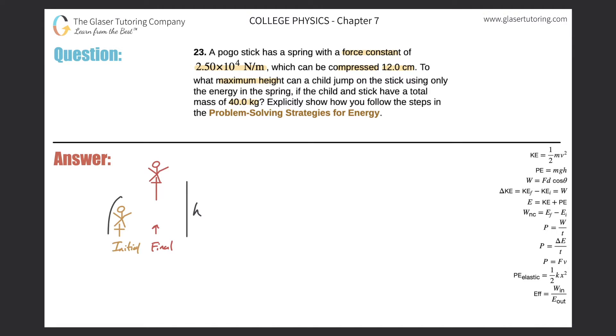So essentially, we have all spring energy initially, all gravitational energy finally. So let's set that up. Basically, whatever energy is initial has to equal final. And since it's spring initial and gravitational final, I can create this formula. The potential energy of the spring is equal to, and therefore is converted to, the potential energy due to gravity. So I'm looking at these two formulas. This is gravitational, this is spring.